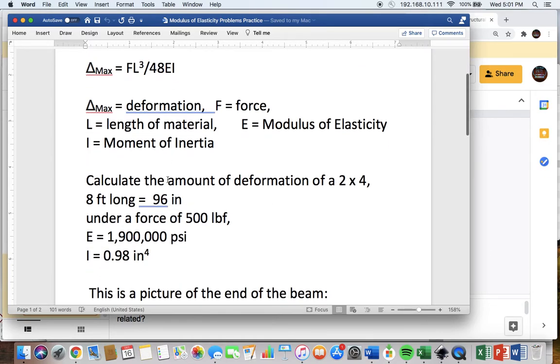Again, it's a 2x4 beam, 8 feet long, that you get at a typical hardware store, which is 96 inches, force of 500 pounds. A 2x4 made of pine has approximately 1.9 million psi modulus of elasticity. And as a moment of inertia in this orientation of 0.98, this is how you would find that moment of inertia.